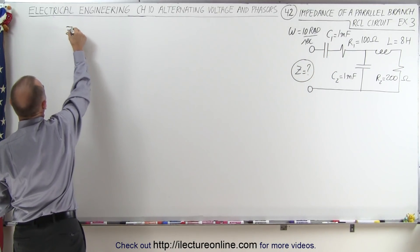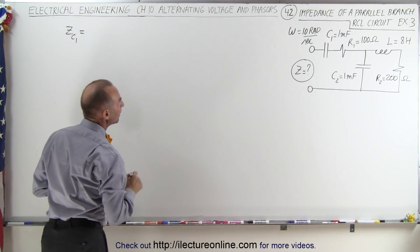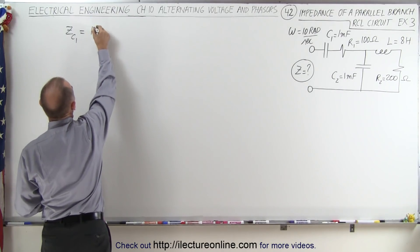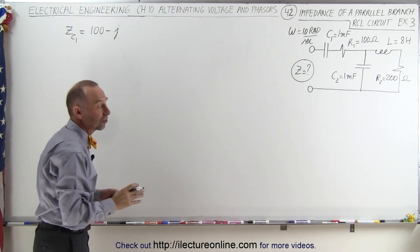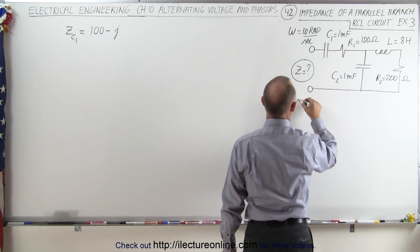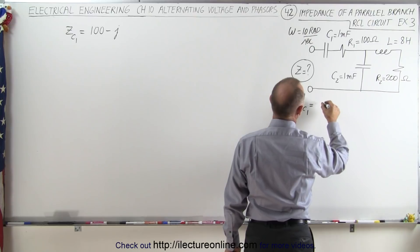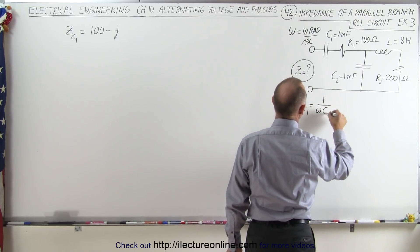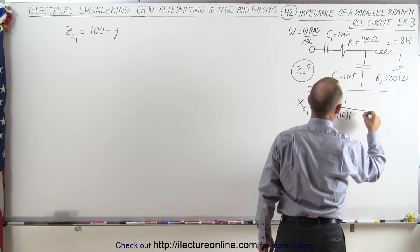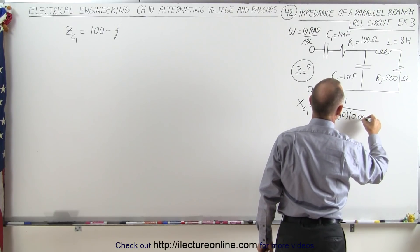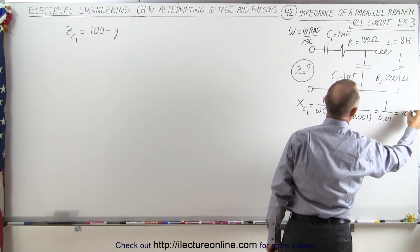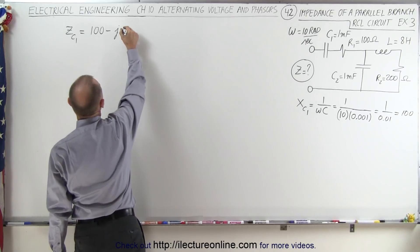We're going to find the impedance of the capacitor one branch. Notice there's a real and an imaginary part: the real part is 100 ohms for the resistor, minus j for the capacitor's imaginary part. For C1, X_C1 equals 1 over omega times C, which is 1 over (10 × 0.001) = 1 over 0.01 = 100. So this becomes 100 minus j100.